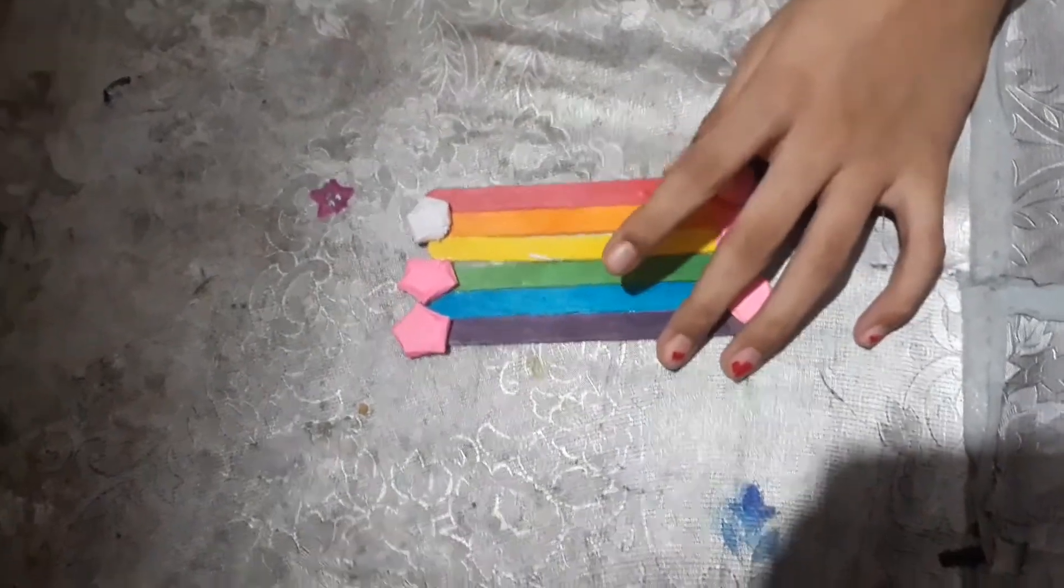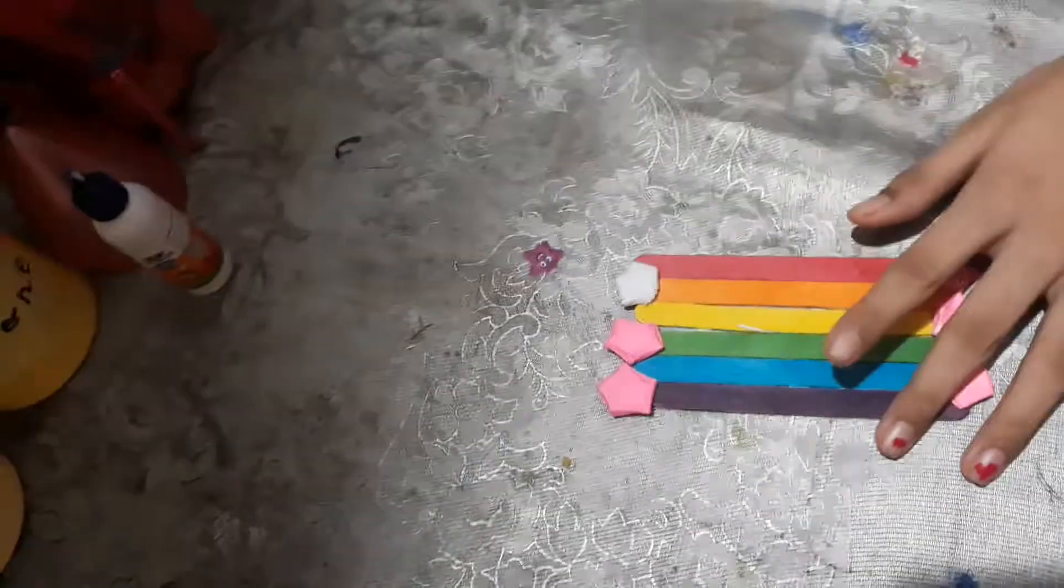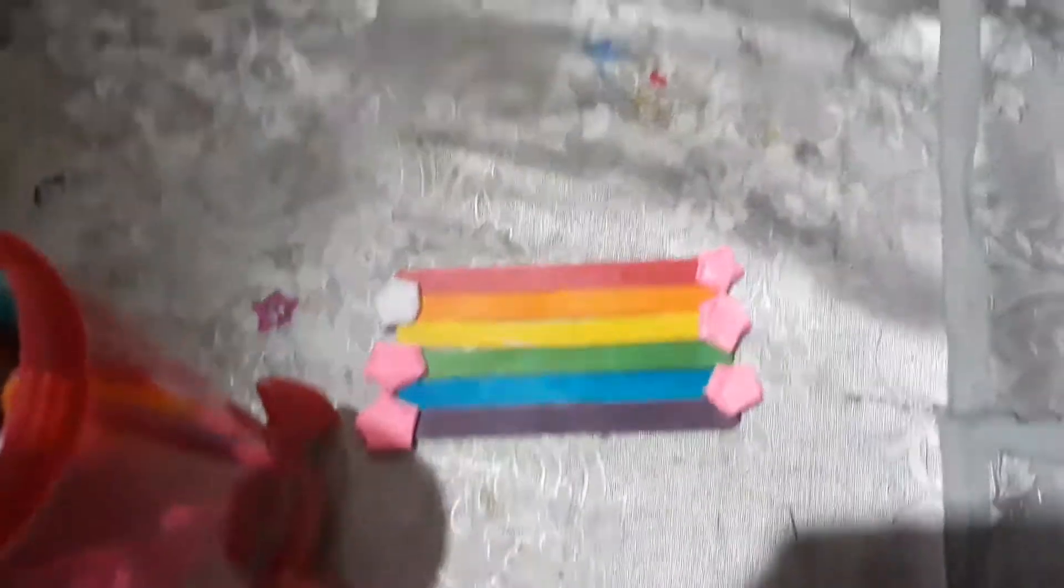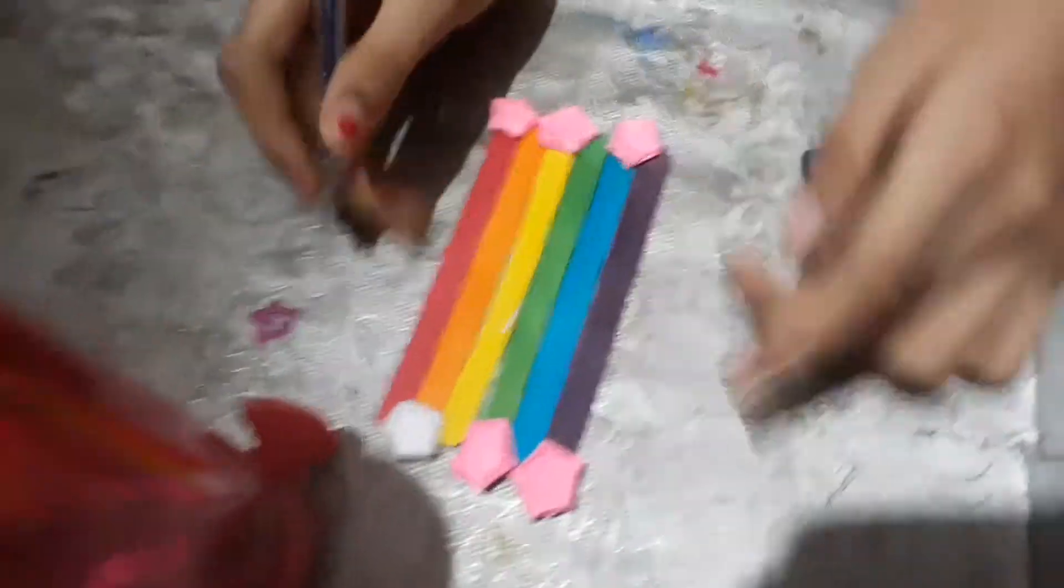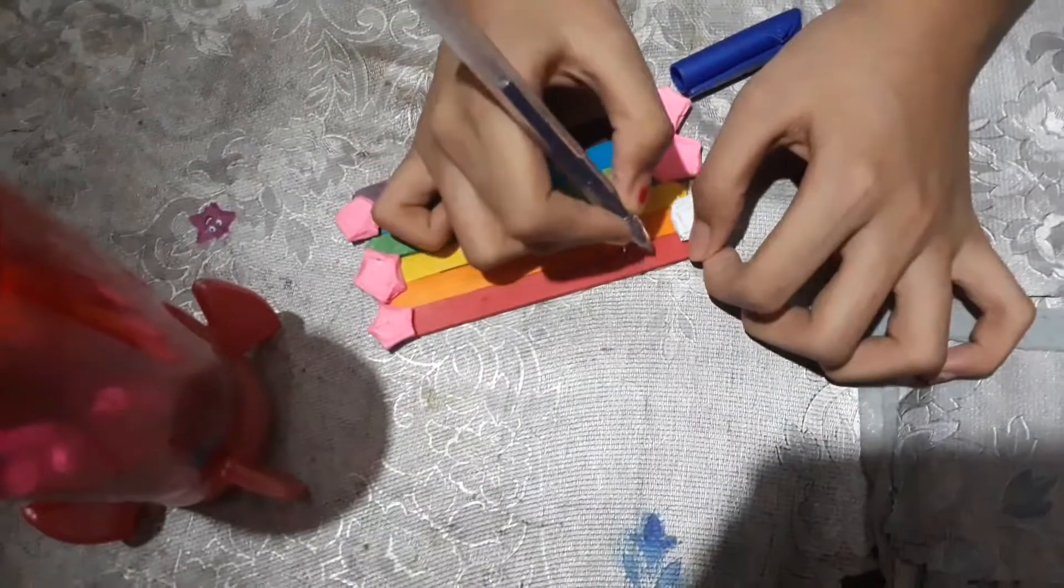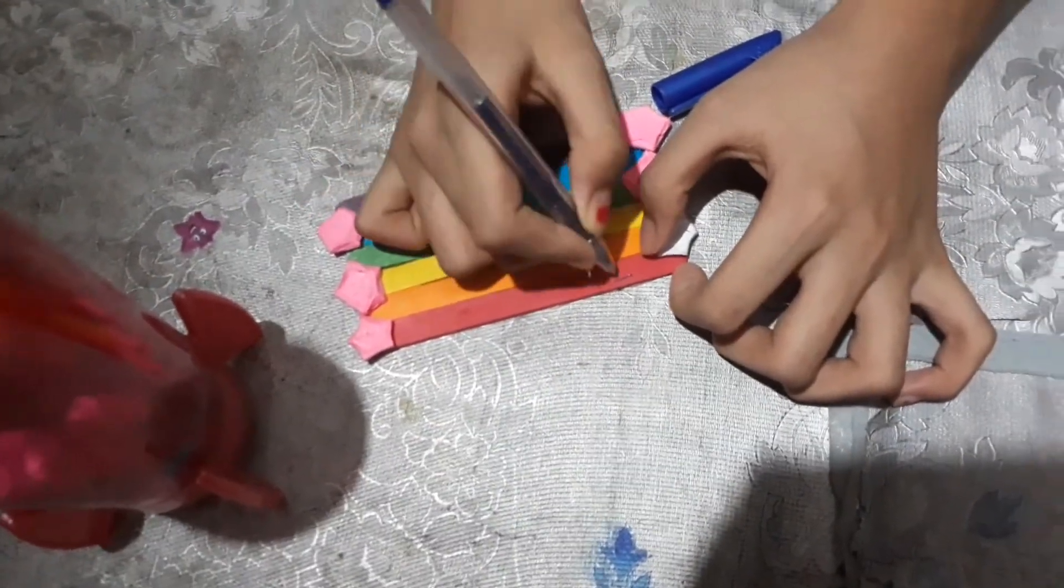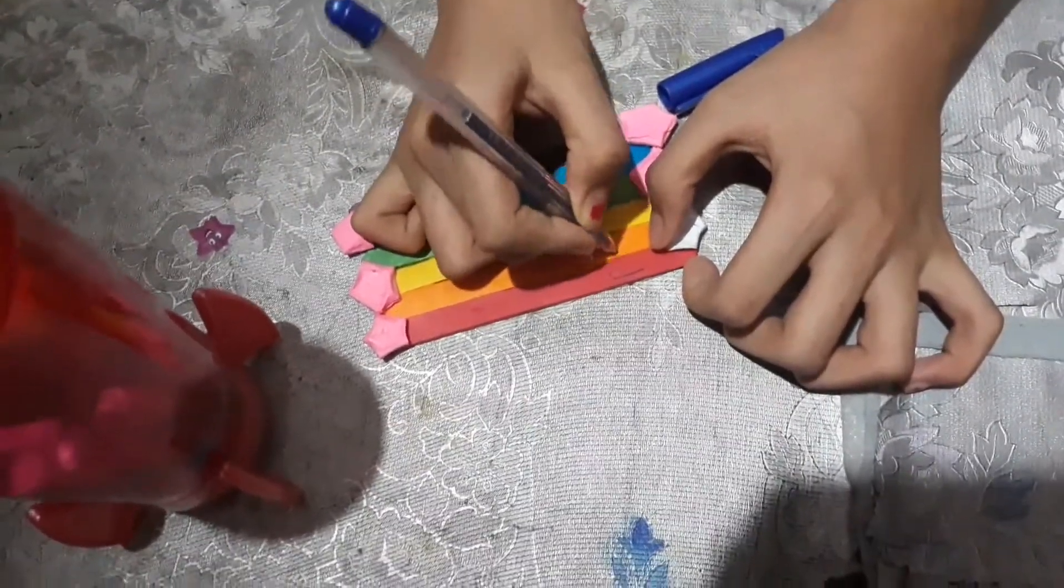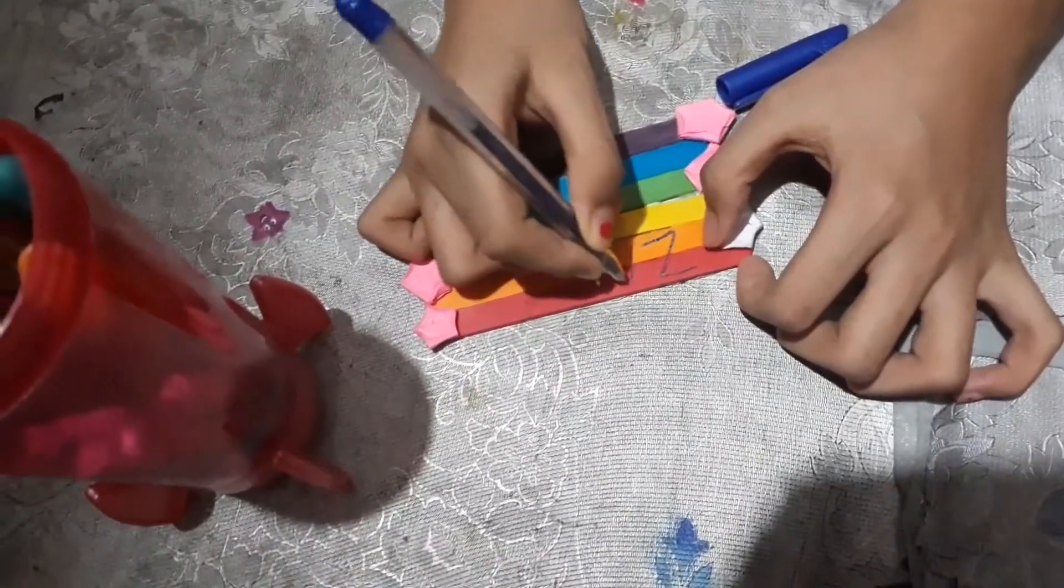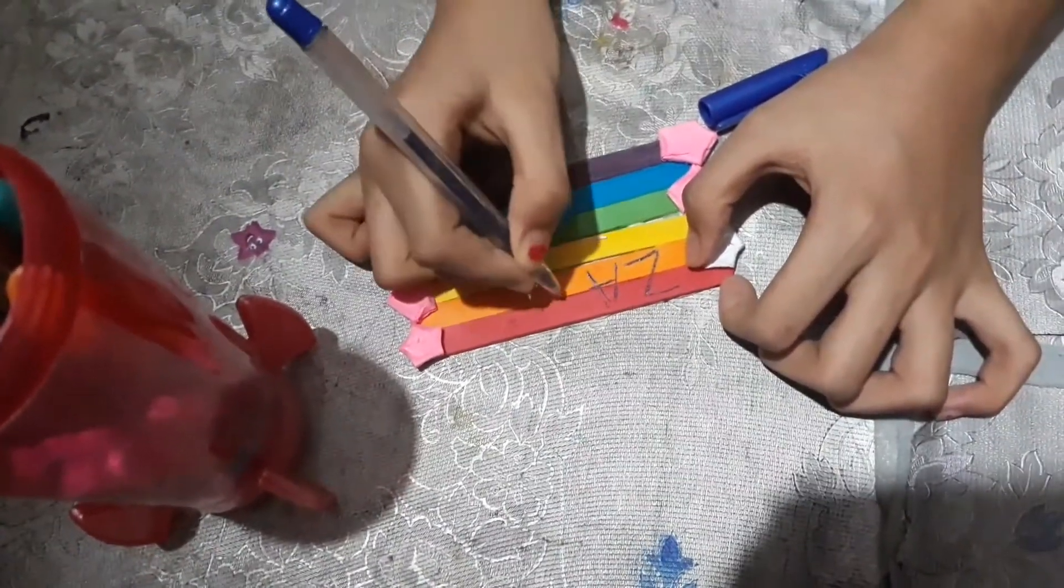So now I'm going to decorate it with some pencils. I have blue color and all. I'm going to write my name and all, so you can also write it if you are scared that your friend will rob it from you in your schools. So you can also write your name, or in class if you lost it you can find it.